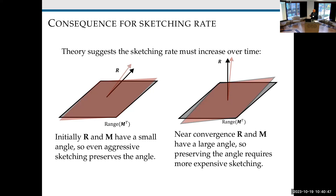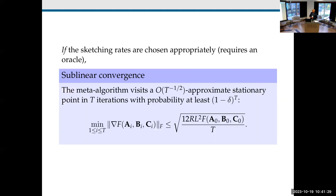The sketching rate needs to increase over time — you have to look at larger and larger subsystems. Initially your residual and system matrix have a small angle, so even aggressive sketching preserves that angle. But near convergence, the residual has to be orthogonal to the system matrix, so preserving the angle requires more expensive sketching. Imagine solving a system whose solution is zero — if you slightly perturb it, the solution becomes non-zero. Choosing sketching rates appropriately requires knowledge of the geometry of the system, which you don't have — that's why this is a meta-algorithm, not an algorithm.